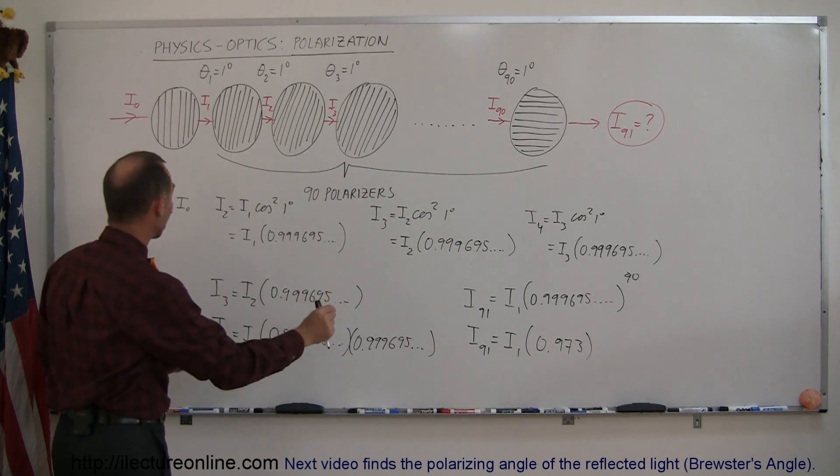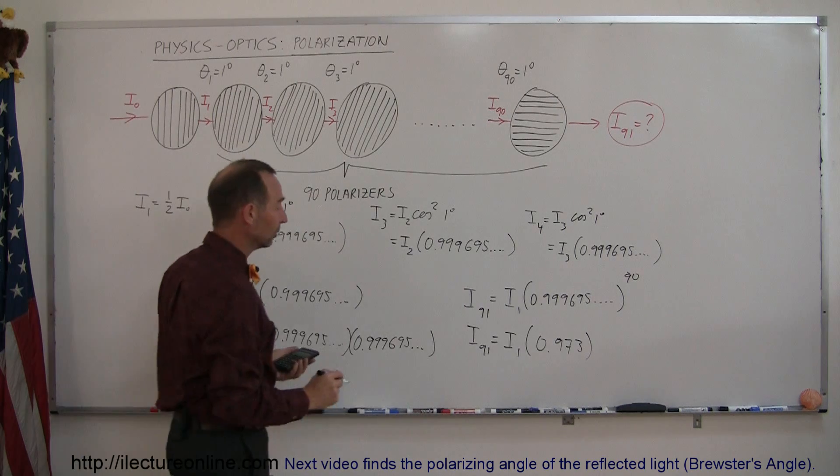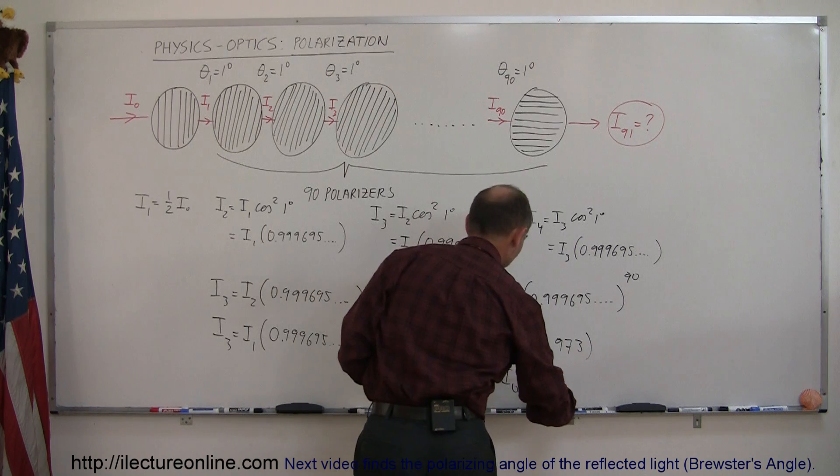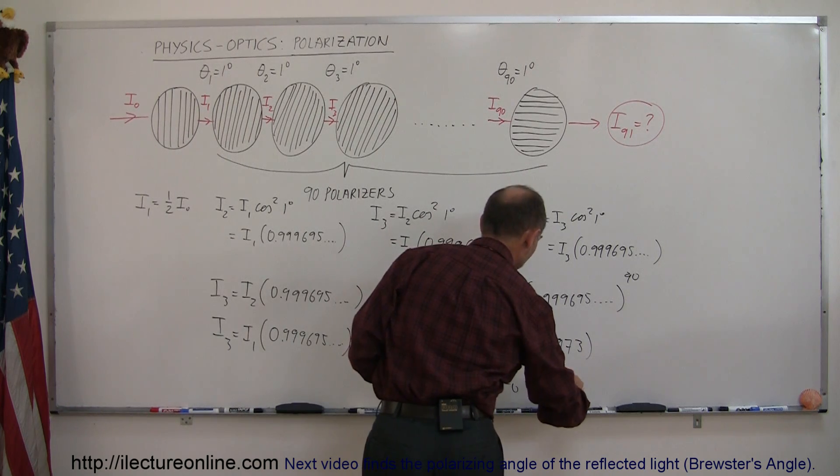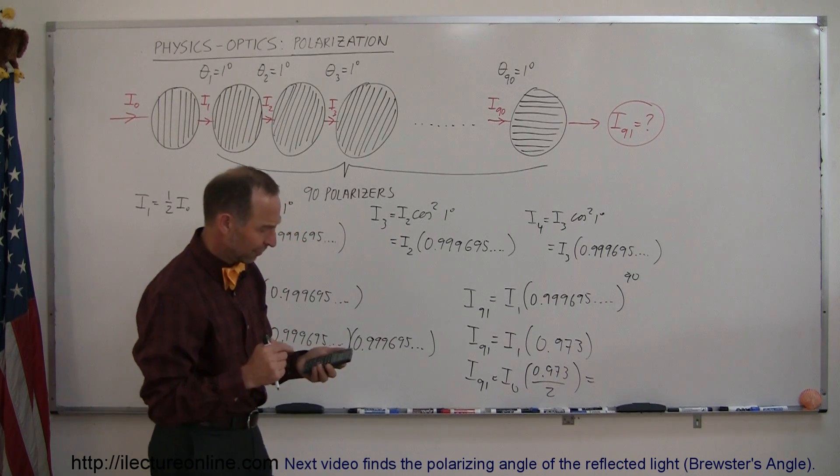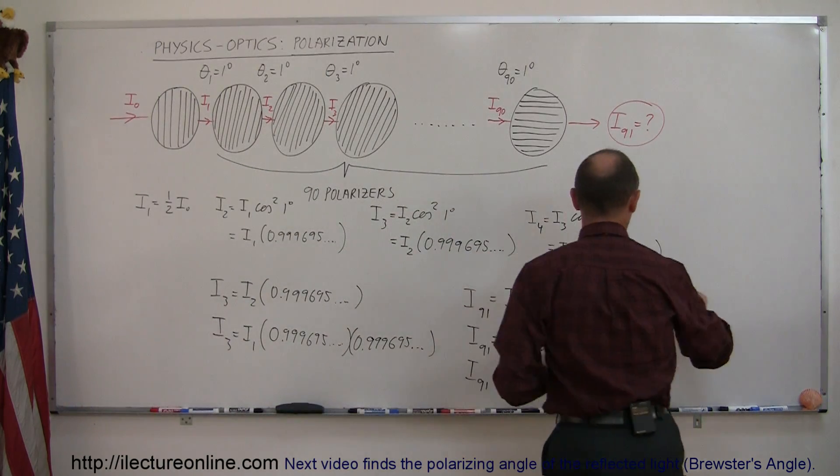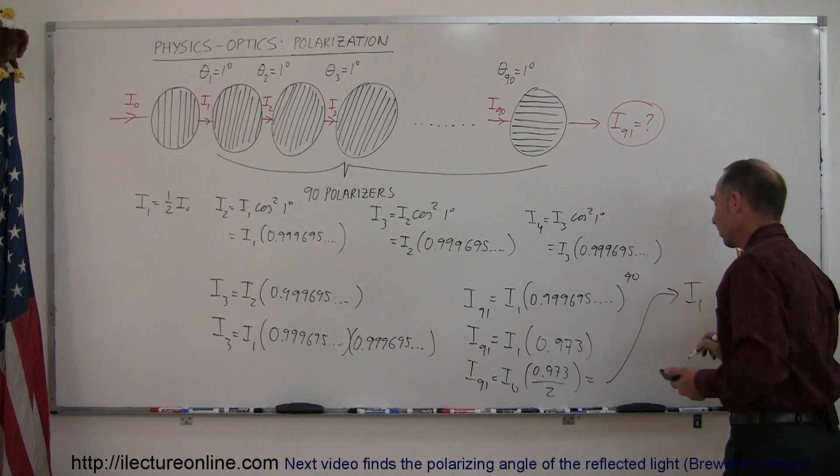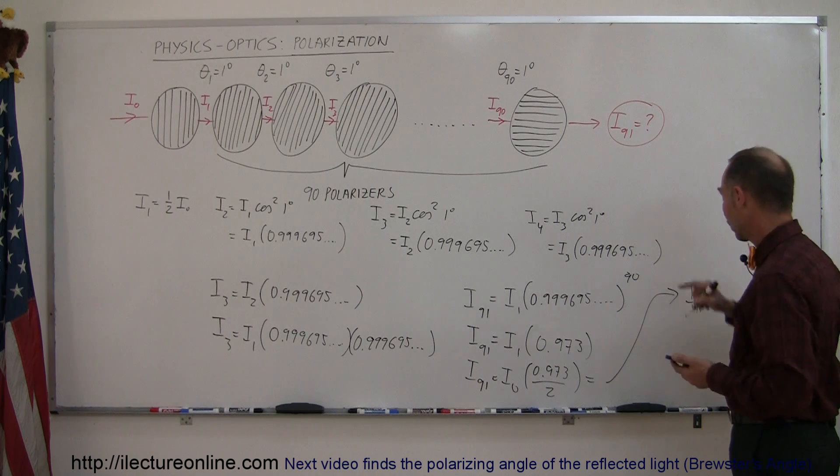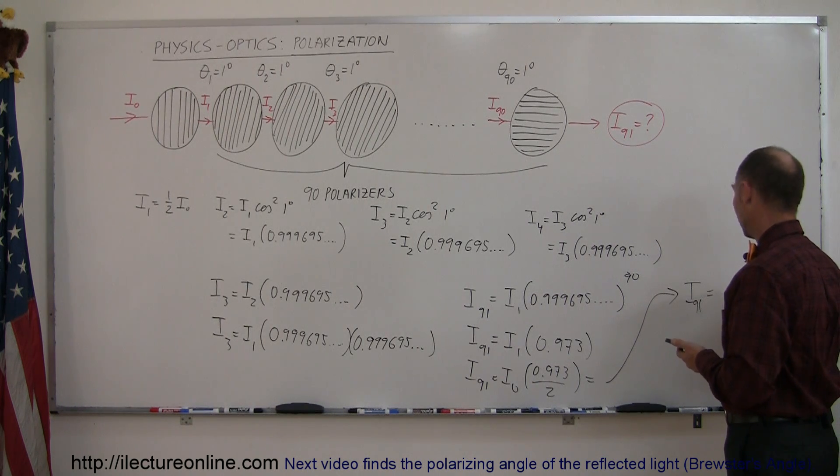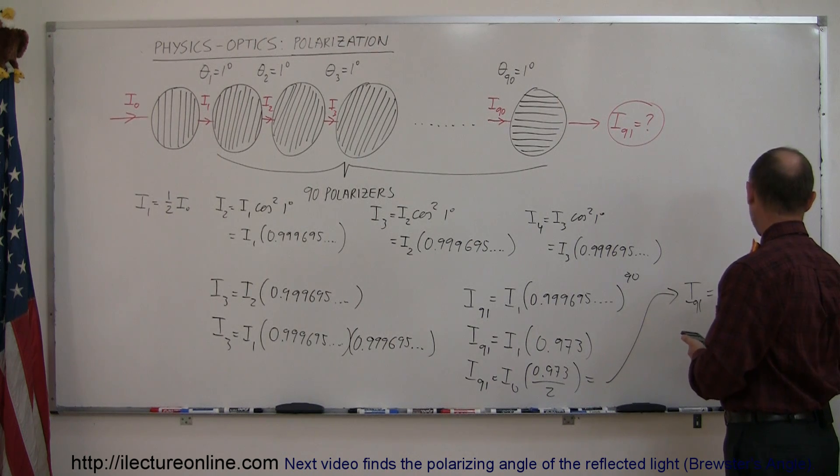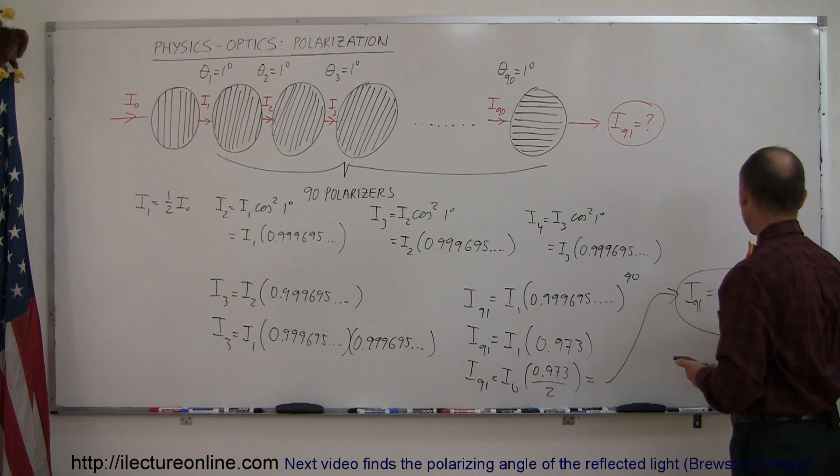And then realizing of course that i sub 1 is equal to 1 half i sub 0, that would be i 91 is equal to i sub 0 times 0.973 divided by 2. So take this number and divide it by 2, and finally we can say that the intensity of the light coming after it's passed through 91 polarizers like that is equal to 0.486 times i sub 0.